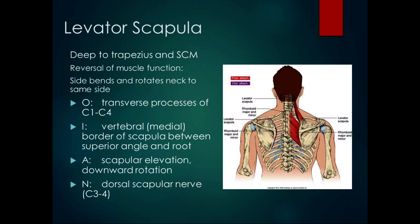The origin of the levator scapula is the transverse processes of C1 through C4, and the insertion is the medial border of the scapula between the superior angle and the root. The superior angle of the scapula is a good bony landmark for finding the levator scapula. It's often a muscle that's aggravated because we're looking down at our phones, books, and computers, causing it trouble — so a lot of times we're working on the levator scapula. It also has a reversal of function: when the scapula is fixed, we get side bending and rotation of the neck to the same side.